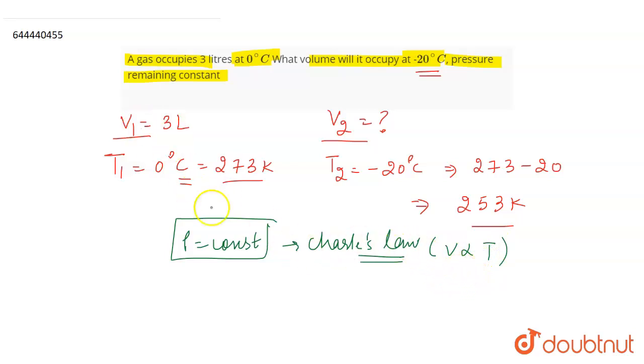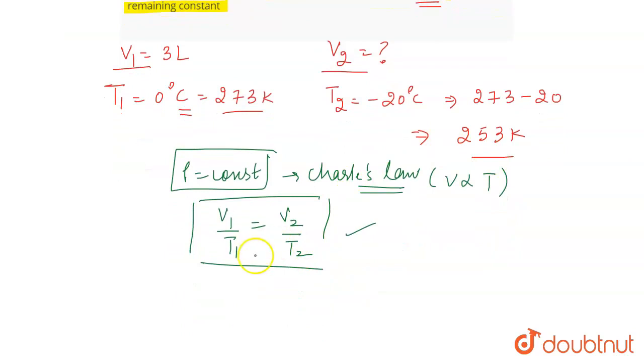And when we have two volumes and two temperatures involved, the equation becomes V1 by T1 is equal to V2 by T2. So this is the equation that we are going to use and solve for the answer. So we have V1, which is 3, T1, which is 273, V2 is something that we have to find out, T2 is 253.